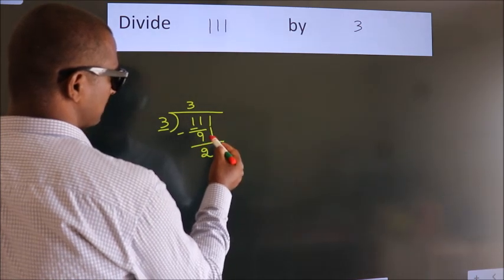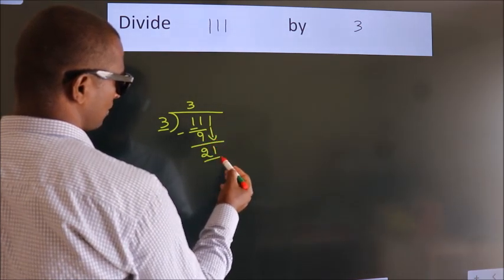After this, bring down the next number. So, 1 down, giving us 21.